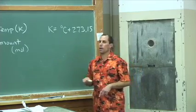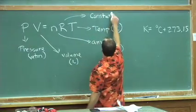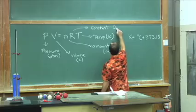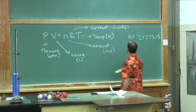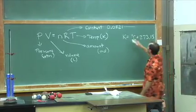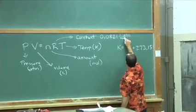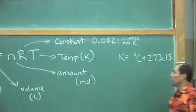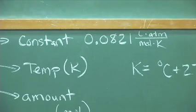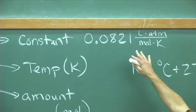PV equals nRT, except for that new letter R. R is a constant. It has been determined experimentally over years and refined. A number that we can use is 0.0821. The units for this constant are liters times atmospheres over moles times Kelvin. That's provided — just know that. Put it on a note card, probably on the front cover of the exam. We call it the ideal gas law constant.